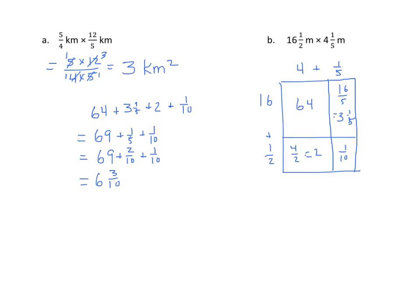We'll do one more example. Here I have 4 and 1 third yards times 5 and 2 thirds yards. Let's see what this looks like when we change it into an improper fraction. 4 times 3 is 12, plus 1 is 13. So I have 13 thirds times 5 times 3 is 15, plus 2 is 17 thirds. I don't see any place where I can find common factors here. I could simply multiply 13 times 17.